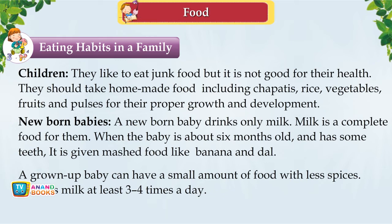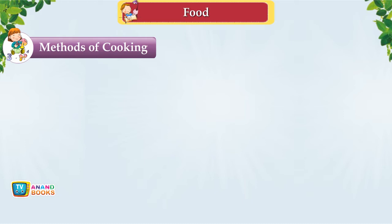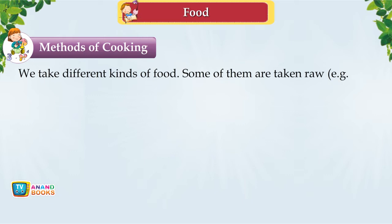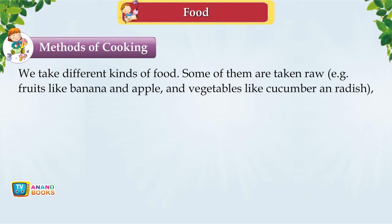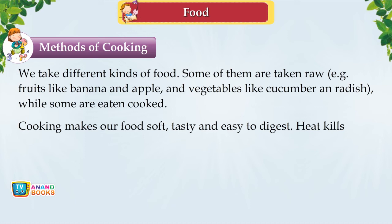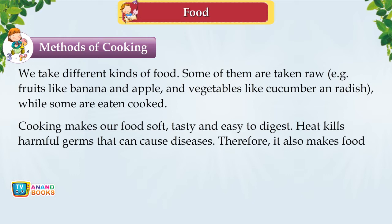Methods of Cooking. We take different kinds of food — some are taken raw, for example fruits like banana and apple, and vegetables like cucumber and radish — while some are eaten cooked. Cooking makes food soft, tasty and easy to digest. Heat kills harmful germs that can cause diseases, making food safe to eat.